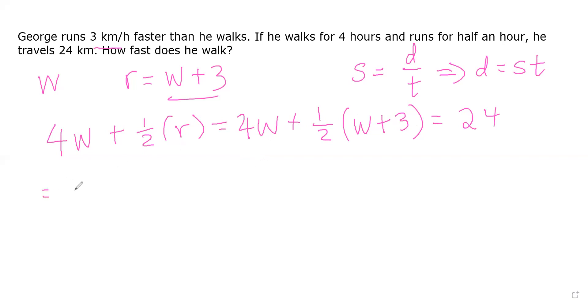We've got to distribute this one half constant into the w as well as the three. So what we'll get is one half w plus one half times three, which is just three over two. This is equal to 24.